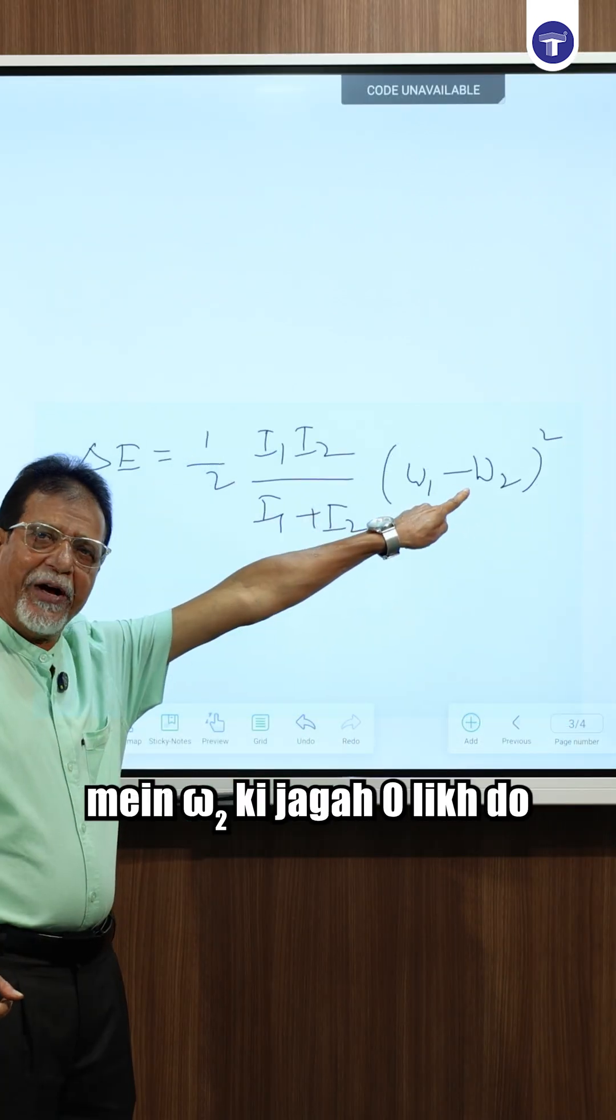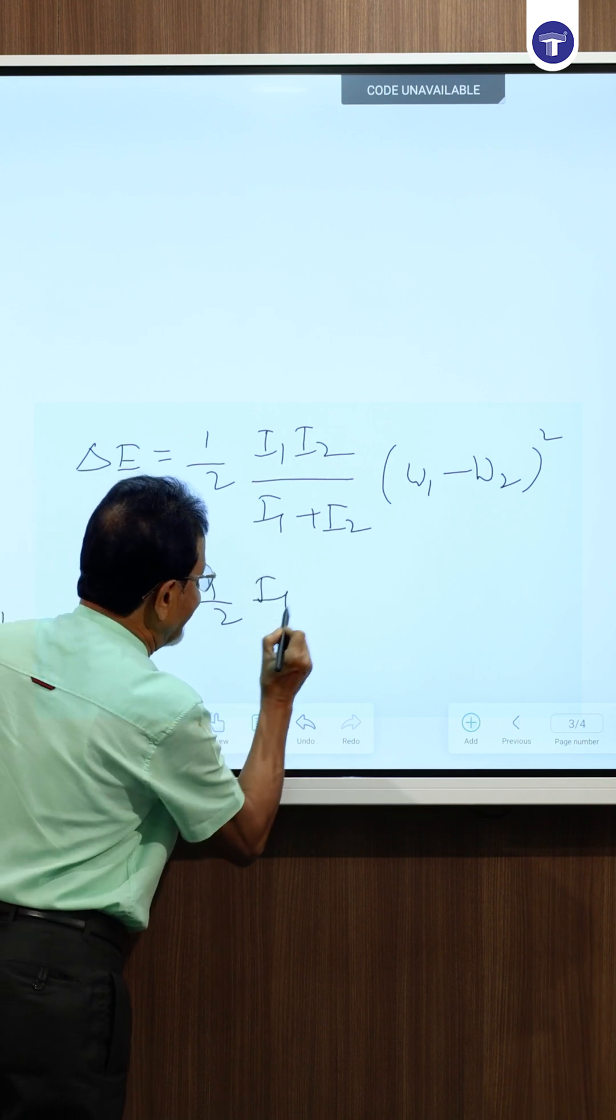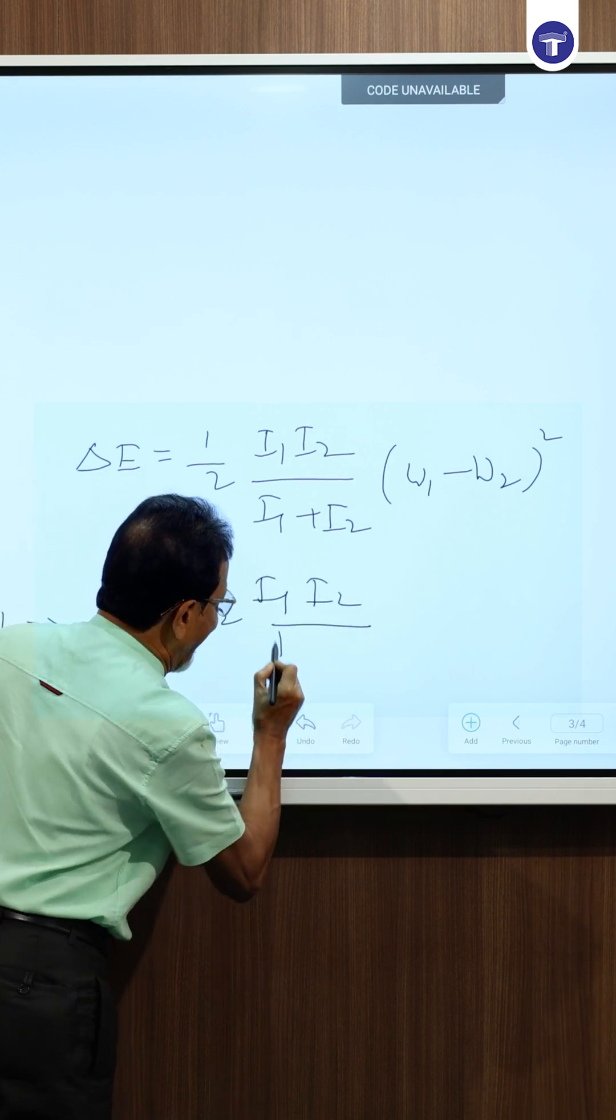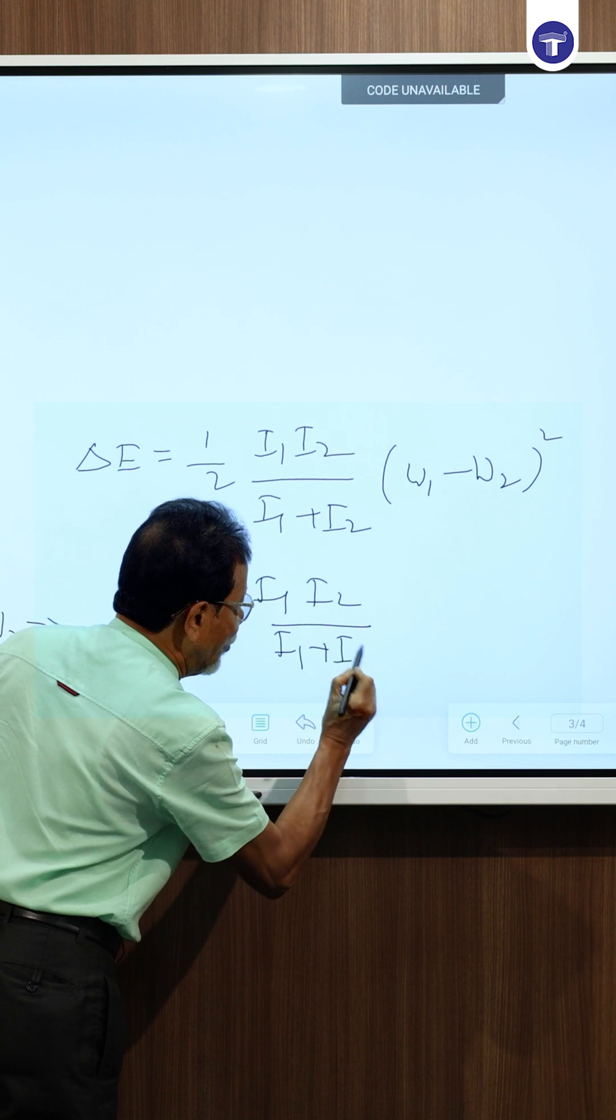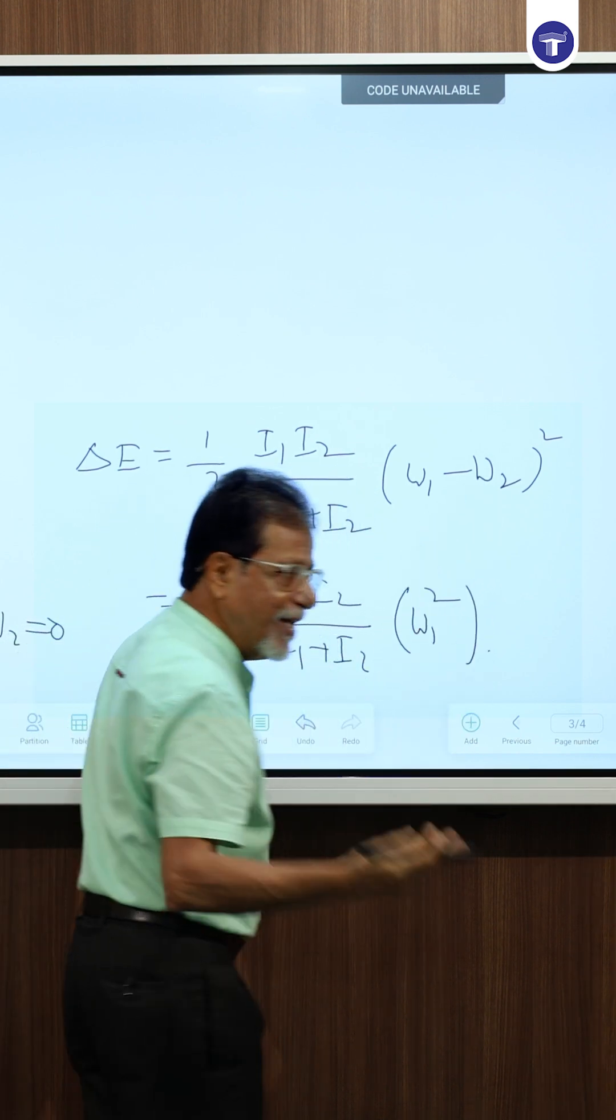In this question, Omega 2 is zero. We will get the answer. So the answer will be ½(I₁I₂)/(I₁+I₂) × Omega 1². That is the answer.